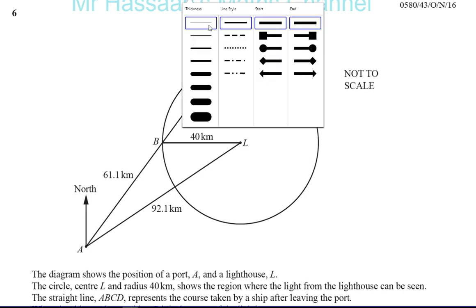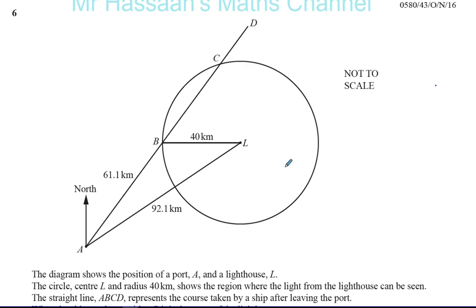So now what we have here, we're given this circle with the center L, and this triangle, and the straight line ABCD, north line, and these lengths. It says the diagram shows the position of a port A, so A is a port, and a lighthouse L, and that's the center of the circle of the lighthouse L. The circle, center L, and radius 40 kilometers, shows the region where the light from the lighthouse can be seen.